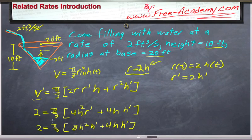So now we have this equation here, just in terms of h and h'. We can separate this out to get h' by itself. So this will give us 6/π = h' times [8h² + 4h].